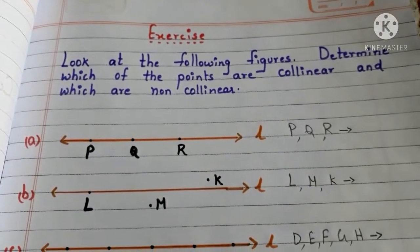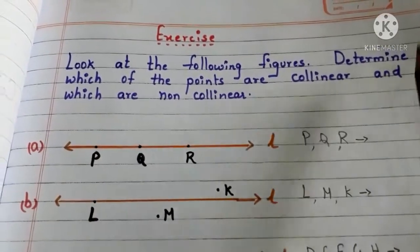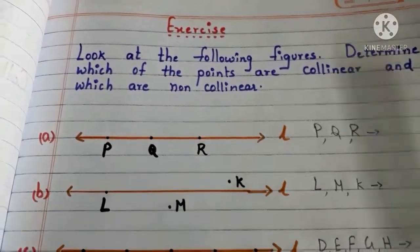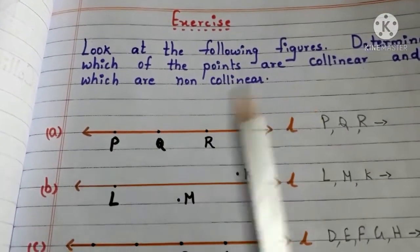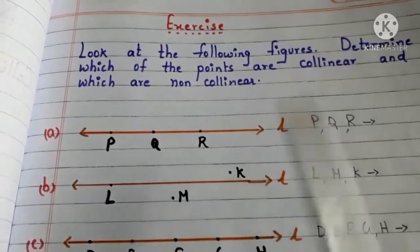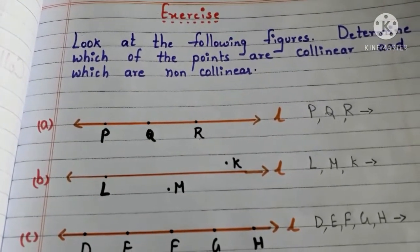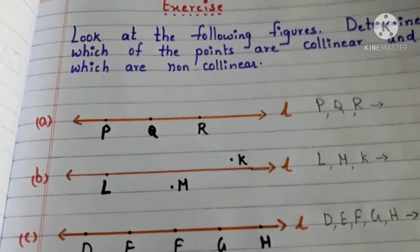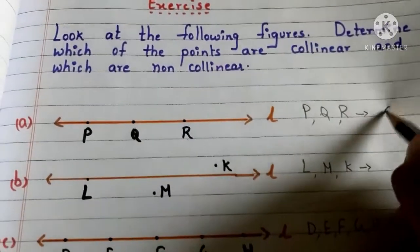Now let us do a small exercise. Look at the following figures. Determine which of the points are collinear and which are non-collinear. Let us go to part A. Here we have a line L and the points P, Q, R. P, Q, R lie on the same line. So, P, Q, R are collinear points.